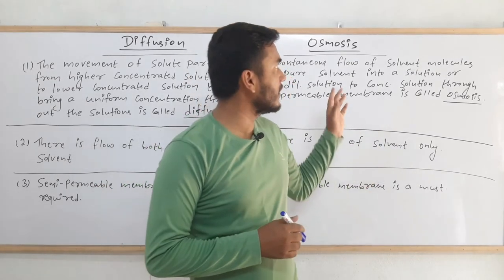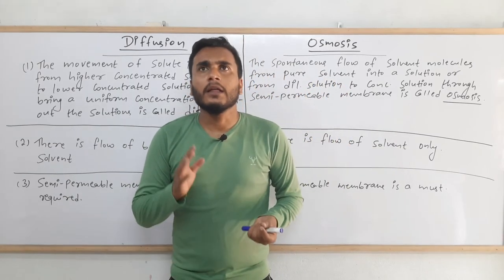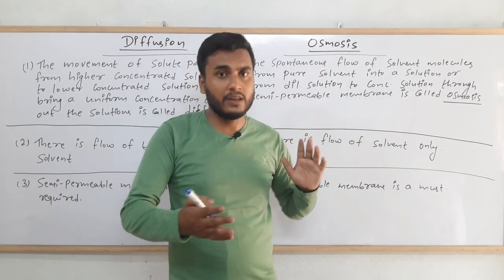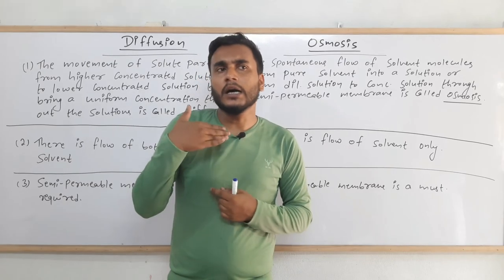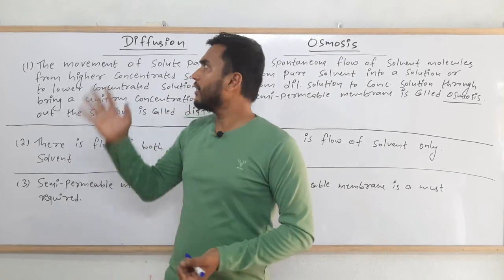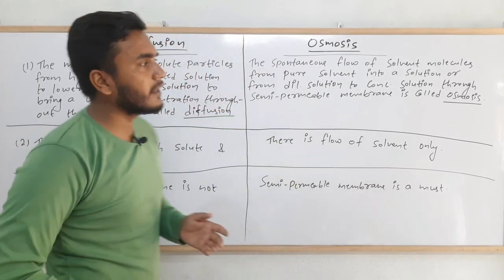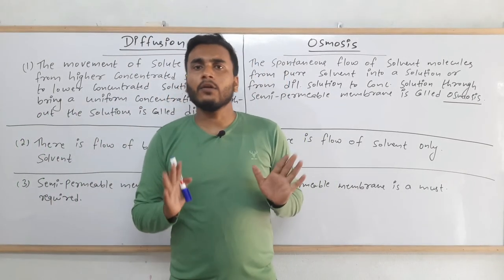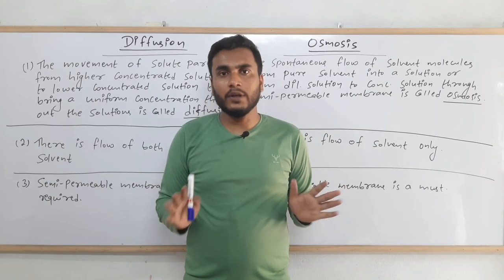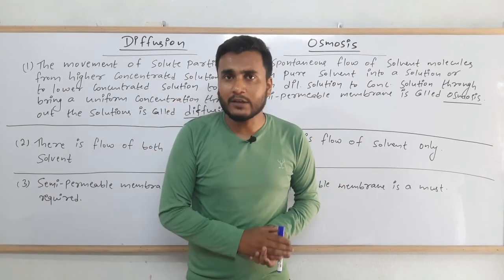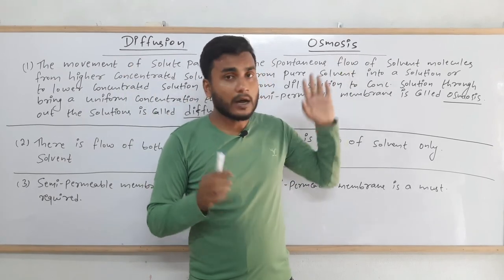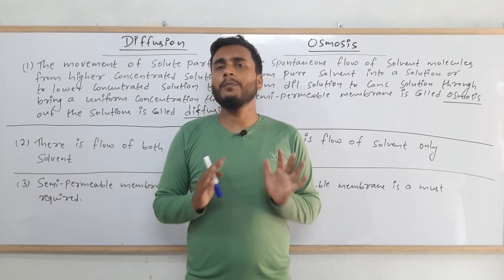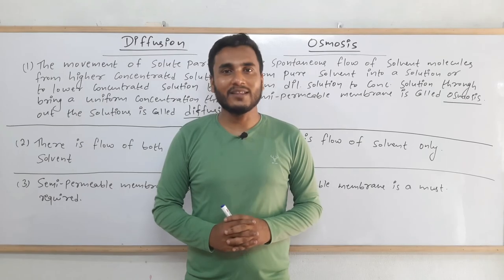One more thing: the minimum amount of pressure that is required to stop osmosis from happening is called osmotic pressure, about which we will study in further videos. So that is all in this video. We understood what membrane and its types are, what diffusion and osmosis are with diagrams, and the differences between diffusion and osmosis. If you like the video, please share it and thank you for watching.